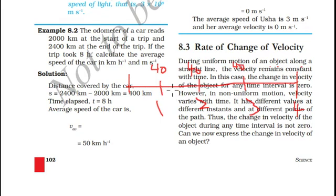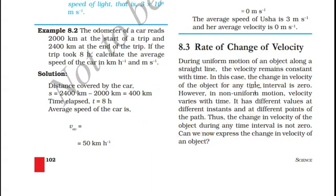You can notice the change of velocity from the first second to the second second. In the second second the velocity is 40 km per hour and in the first second the velocity is also 40 km per hour. So the change in velocity at a given instance of time is equal to zero. If the change in velocity for any time interval is zero, then the object is moving in uniform motion.